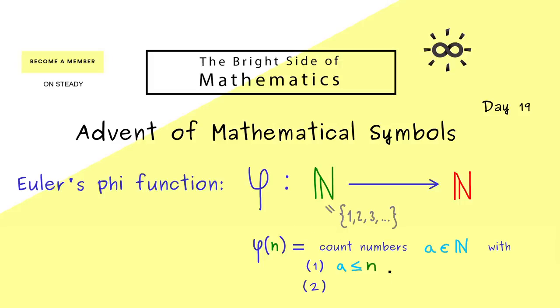The second property tells us that a and n don't have a single common divisor, of course except 1, because 1 divides everything. Hence we can write this as the greatest common divisor, gcd(a,n), is equal to 1. In mathematics then we say that a and n are mutually prime.